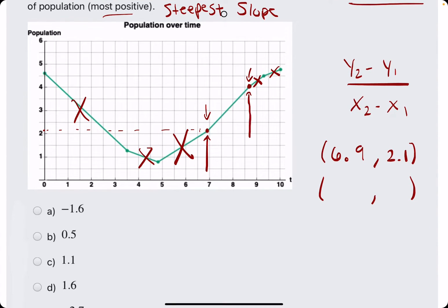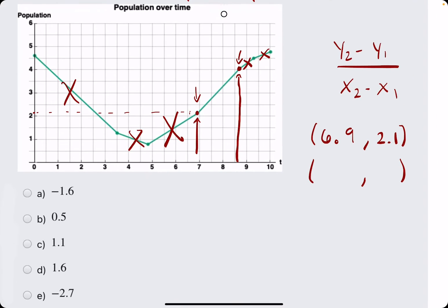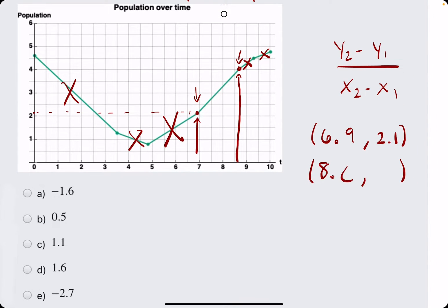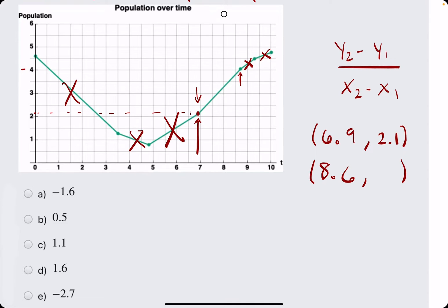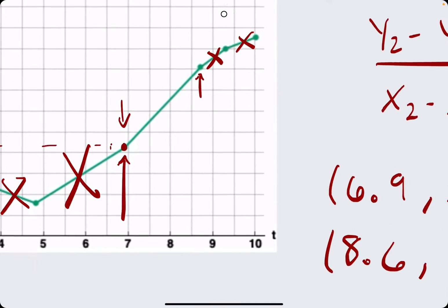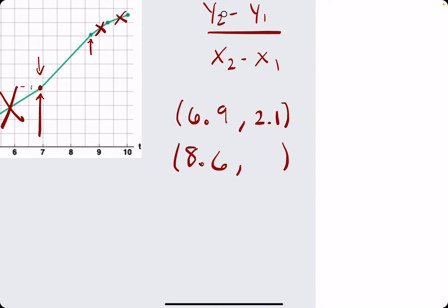The x value for the second ordered pair looks like it is about 8.6, just past 8.5. And then, the y value is just above that 4 line, but just barely, it's kind of still touching the line. So maybe I'll say 4.05.